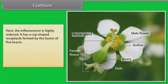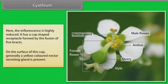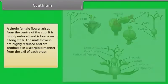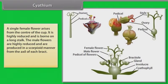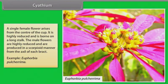In cyathium, the inflorescence is highly reduced. It has a cup-shaped receptacle formed by the fusion of five bracts. On the surface of this cup, generally a yellow colored nectar-secreting gland is present. A single female flower arises from the center of the cup — it is highly reduced and is borne on a long stalk. The male flowers are highly reduced and are produced in a scorpioid manner from the axil of each bract. Example: Euphorbia pulcherrima.